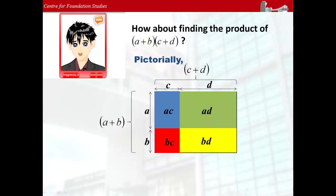Hence, we can see that the area of the big rectangle of dimension a plus b by c plus d is made up of the total areas of four smaller rectangles: ac plus ad plus bc plus bd.